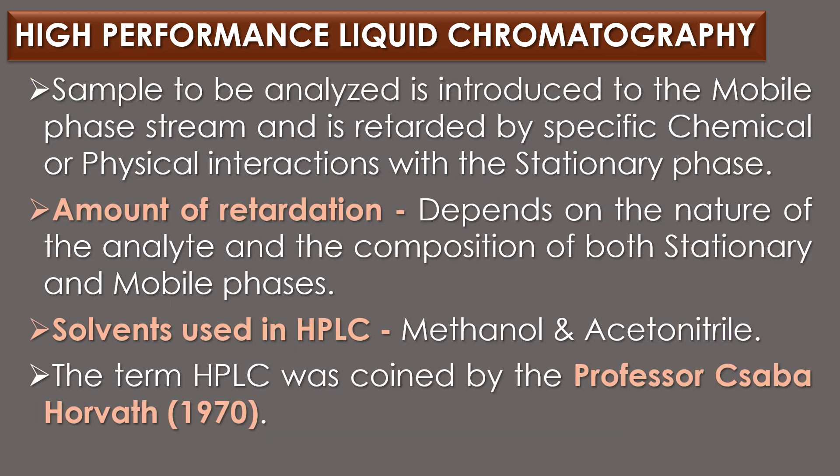In HPLC, a small volume of sample to be analyzed is introduced to the mobile phase stream and is retarded by specific chemical or physical interactions with the stationary phase. The amount of retardation mainly depends on the nature of the analyte and the composition of both stationary and mobile phases. The most common solvents used in HPLC are methanol and acetonitrile. The term HPLC was coined by Professor Csaba Horváth in the year 1970, indicating that high pressure was used to generate the flow required for liquid chromatography in packed columns.